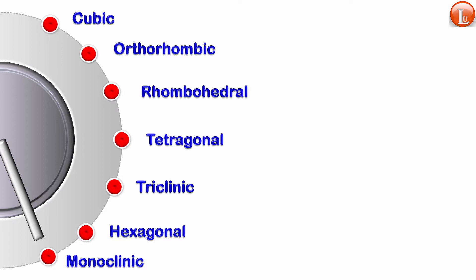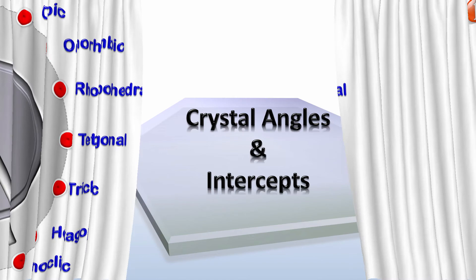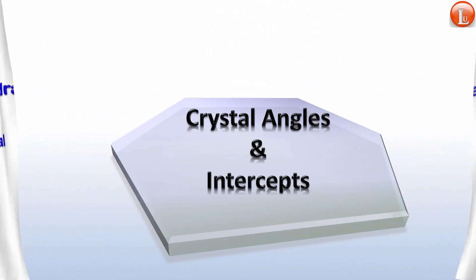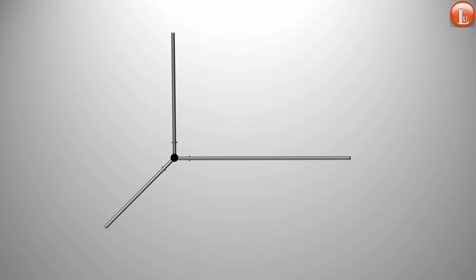To understand what these shapes actually look like, we need to understand what are known as the cell parameters. The cell parameters consist of crystal angles and intercepts. Intercepts are the length, width, and height. Crystal angles are the angles between these. Length is represented by A, width by B, and height by C.